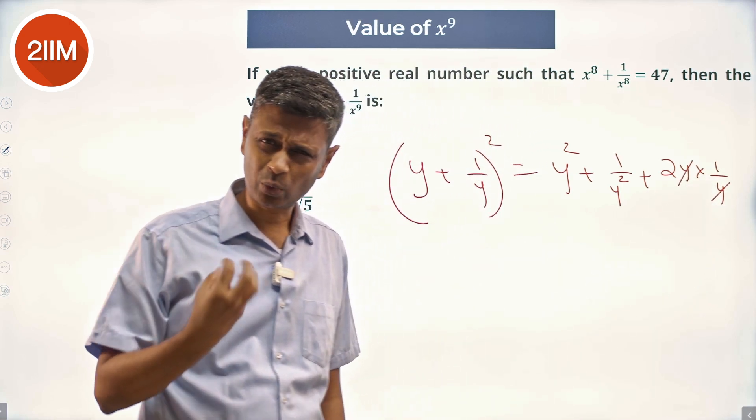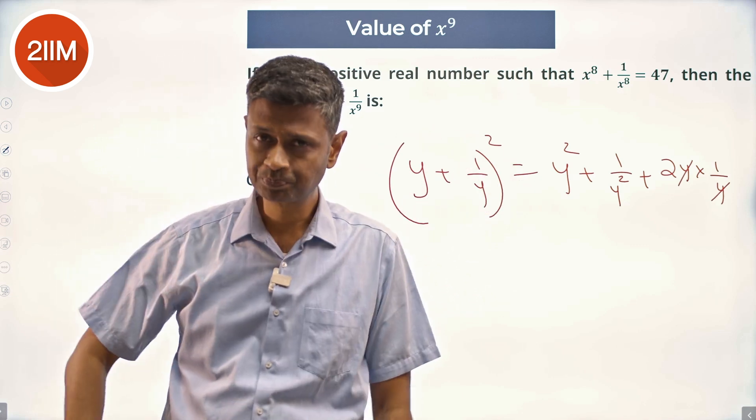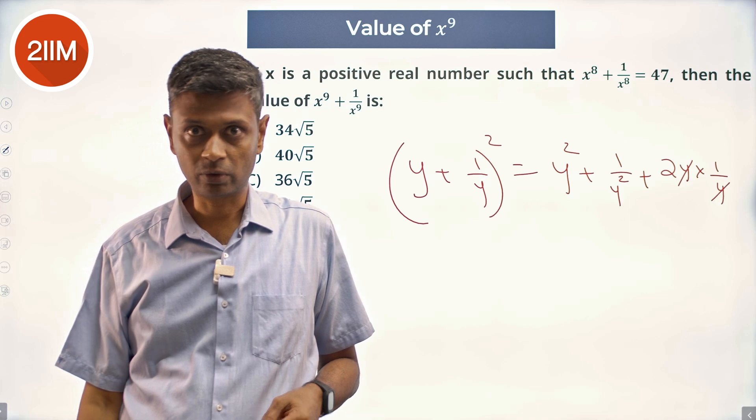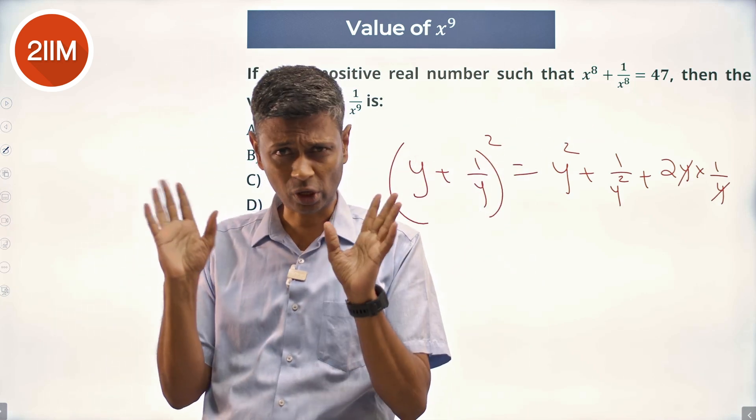So if we have y + 1/y, we can get y^2 + 1/y^2. Now, from y^2 + 1/y^2, we can get y^4 + 1/y^4, then one step more and we've got that.